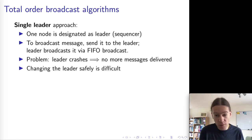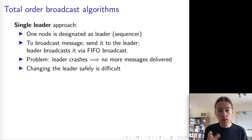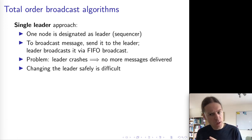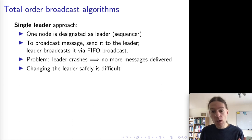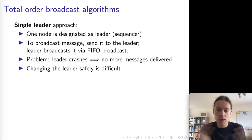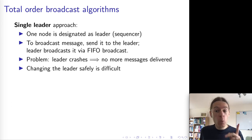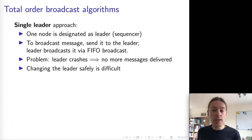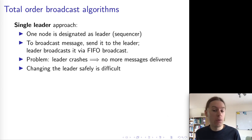This works quite nicely, but it has the problem that if our leader crashes, then no more messages can get delivered, because we're requiring all messages to go through the leader. So really, we would need some way of changing the leader from one node to another in case the leader crashes. But this is quite difficult to do safely, because if you end up with two different leaders, then your guarantee of total order is gone. We will see ways of doing this kind of leader change safely in a later lecture when we come to talk about consensus. But for now, I'm just going to leave this as an open problem.